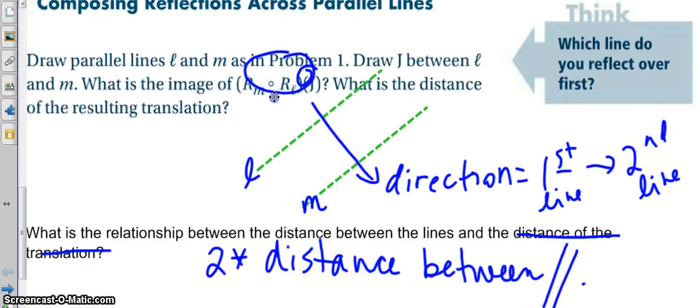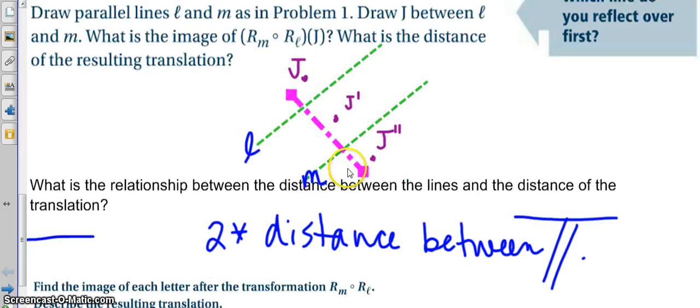So, then what we see down here is that if I'm reflecting line M and reflecting line L, and I'm doing this to point J, what is the distance of the resulting translation? So, when we're reflecting with the parallel line, say I take point J, and I reflect over line L, and I reflect over line M, the distance from J to J double prime is going to actually be twice the distance between L and M.